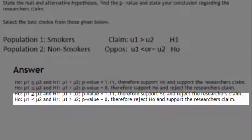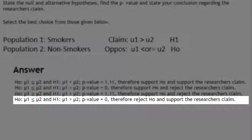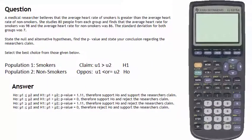If you carefully examine the choices given, you see that the fourth choice has the correct null and alternative hypotheses, the p-value equal to 0, and the decision is to reject the null hypothesis and therefore support the researcher's claim, making choice 4 the correct choice for this particular problem.